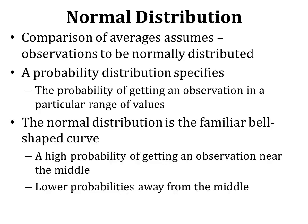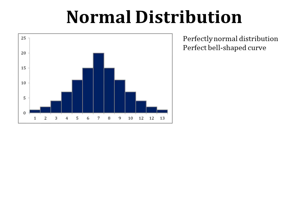The normal distribution is the familiar bell-shaped curve. There is a high probability of getting an observation near the middle and a lower probability away from the middle. In a perfectly normal distribution, the seventh class represents the mean value and most observations are scattered around it. As we move away from the center, the probability gradually decreases to a minimum at the extremes.